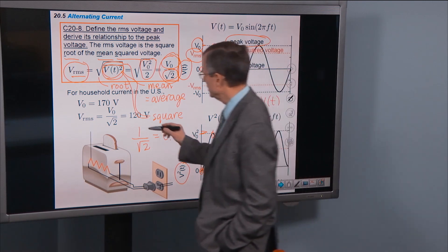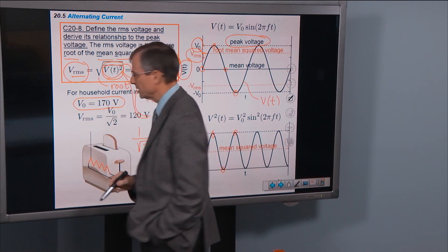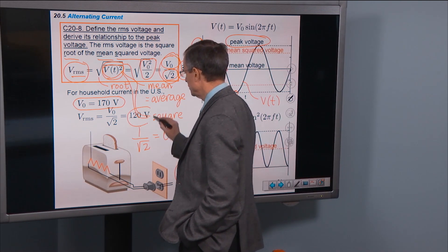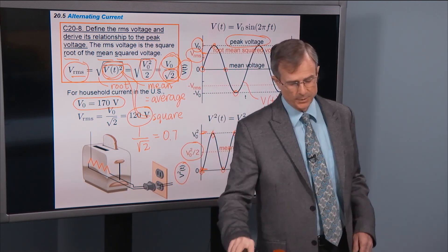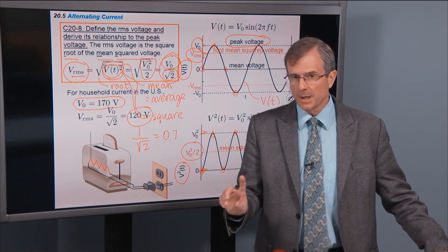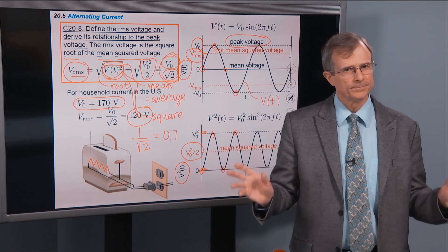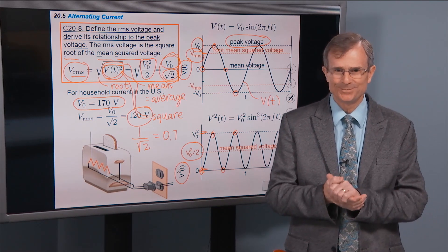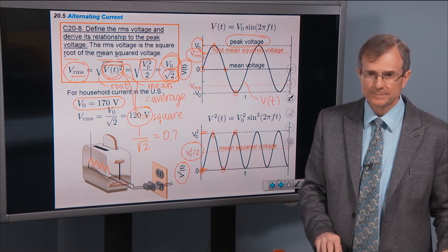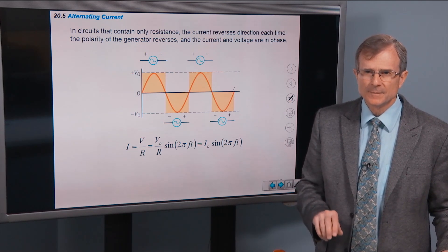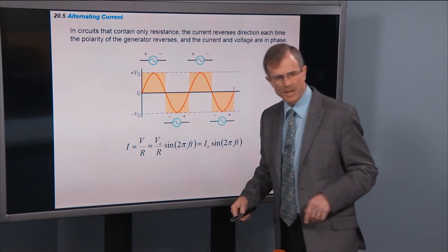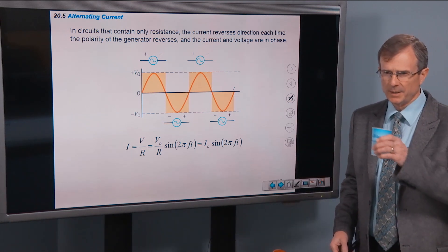For household currents in the U.S., the peak voltage is 170 volts and the RMS voltage is 120 volts. So when people talk about your household circuits being a 120-volt circuit, they are talking about the RMS voltage, not the peak voltage. This is a great introduction to the topic we'll develop further.